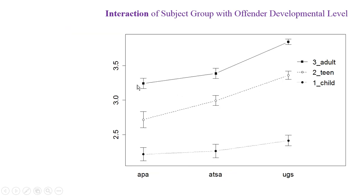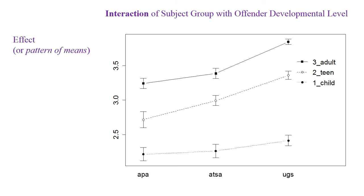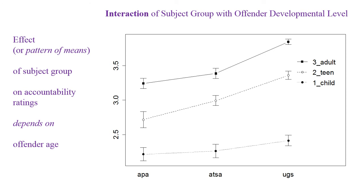Or we can look at it the other way — the effect of ages across the different subject groups. Among APA people, there's a pretty regular distribution across child, teen, and adult. ATSA gave teens relatively more responsibility. The undergrads have teens shifted more toward adults, and everything is shifted upward. The pattern of the means of the dependent variable changes for one variable across the levels of the other variable. So the effect of subject group on accountability ratings changes depending on what offender age is present — there's an association between the two categorical variables, subject group and offender age, and they interact in how they affect the dependent variable.